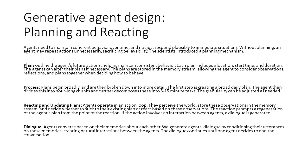Agents need to maintain coherent behavior over time and not just respond plausibly to immediate situations. Without planning, an agent may repeat actions unnecessarily, sacrificing believability. The scientists introduced a planning mechanism — plans outline the agent's future actions, helping maintain consistent behavior. Each plan includes a location, start time, and duration. The agents can alter their plans if necessary. Plans are stored in the memory stream, allowing the agent to consider observations, reflections, and plans together when deciding how to behave.